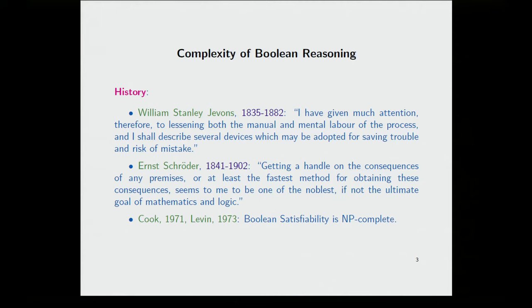And then, this is an amazing quote. This is Ernest Schroeder, a German algebraist, and he writes, getting a handle on the consequences of any premises, or at least the fastest method for obtaining these consequences, seems to me to be one of the noblest, if not the ultimate goal, of mathematics and logic. Nothing short of that. And of course, we know that ultimately, in the early seventies, Cook and Levin showed the Boolean satisfiability is NP-complete, which kind of explains why we had over a century before that of people not finding really any very fast method for satisfiability.